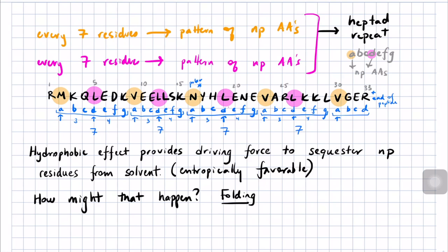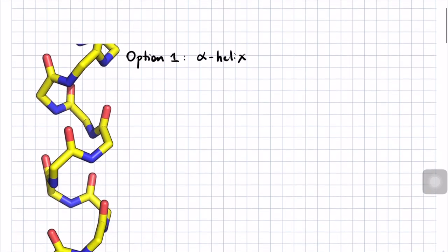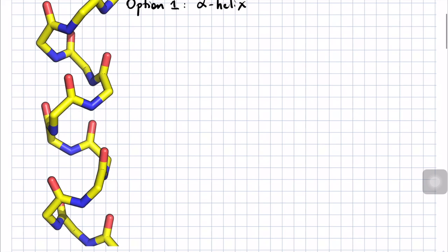So how might this sequence fold up to sequester its nonpolar residues from solvent? Is there some set of rules that might govern that process? Let's talk about what some of the options for folding are for this sequence and see whether any of them lead to a structure that could sequester nonpolar residues from solvent. One option is the alpha helix. I've shown here a backbone diagram of an alpha helix.